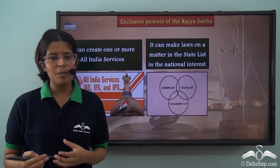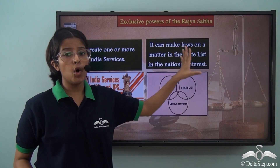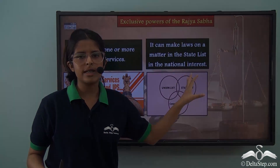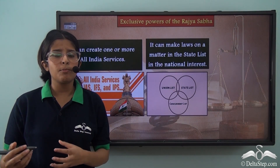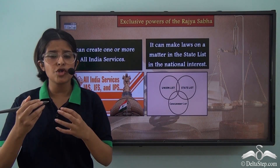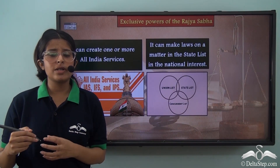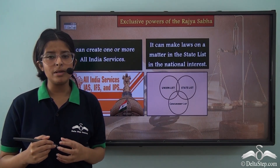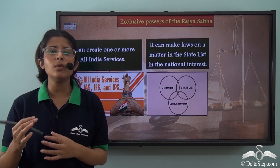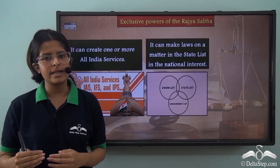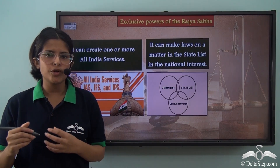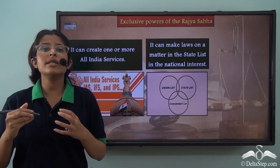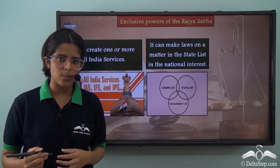The second exclusive power of the Rajya Sabha is that it can make laws on a matter which is in the State List, in the national interest. State legislatures are normally supposed to legislate on matters under the State List, but when the Rajya Sabha passes a resolution with a two-thirds majority of its members, it can legislate on such matters. However, this law will be temporary with a validity of one year, though that one-year period can be extended.